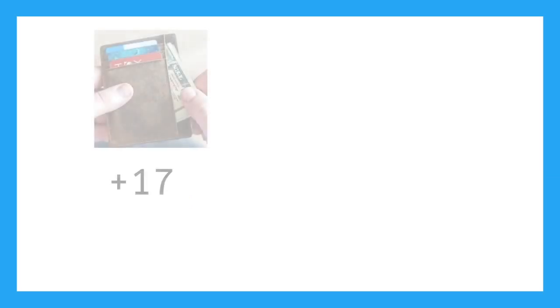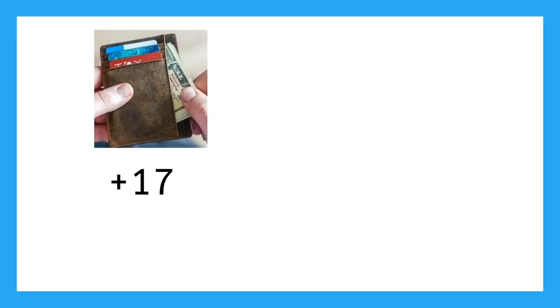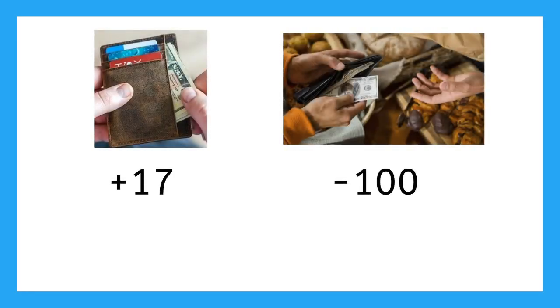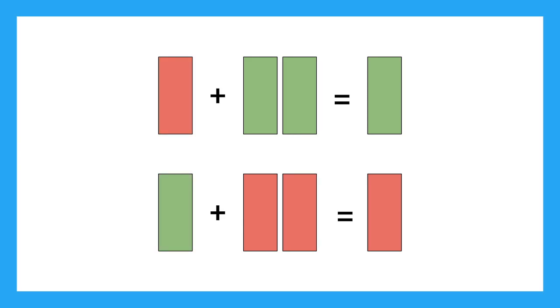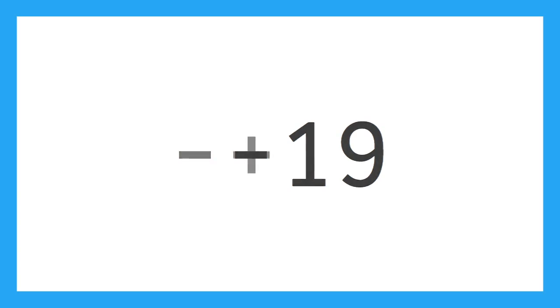Quick recap: positives are money you have, negatives are money you owe or pay. Adding two positives or two negatives results in a bigger number with the same sign. Adding a positive and a negative keeps the sign of whichever amount was bigger. And finally, subtracting a negative is the same as addition.